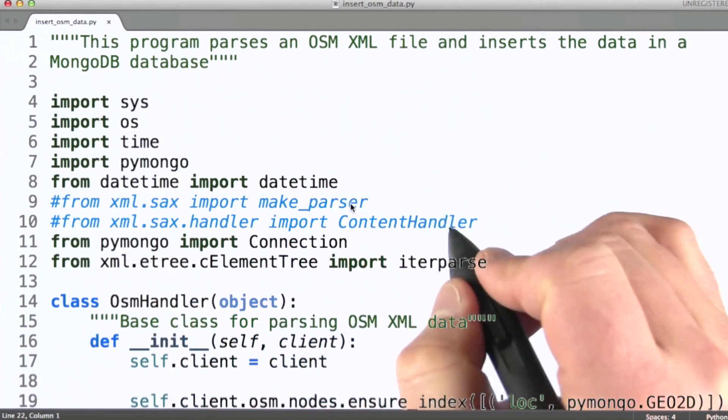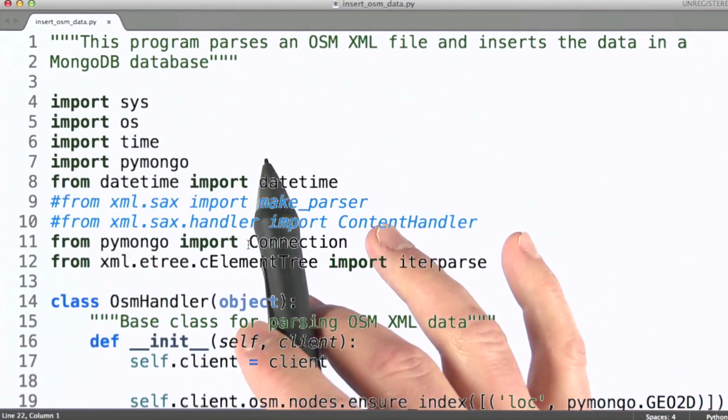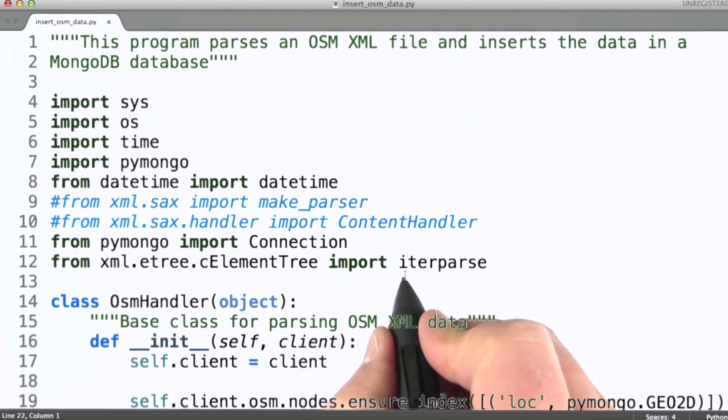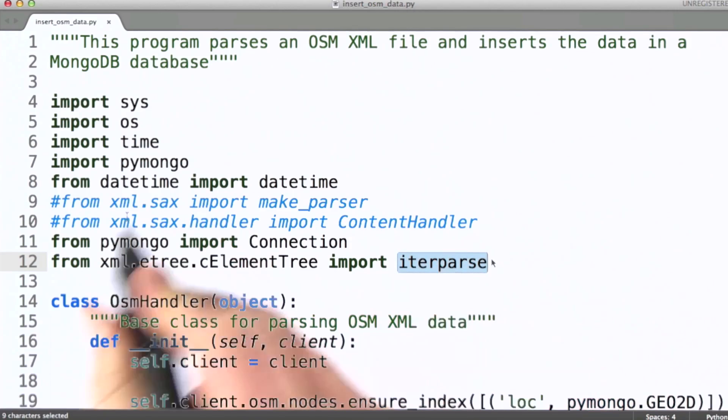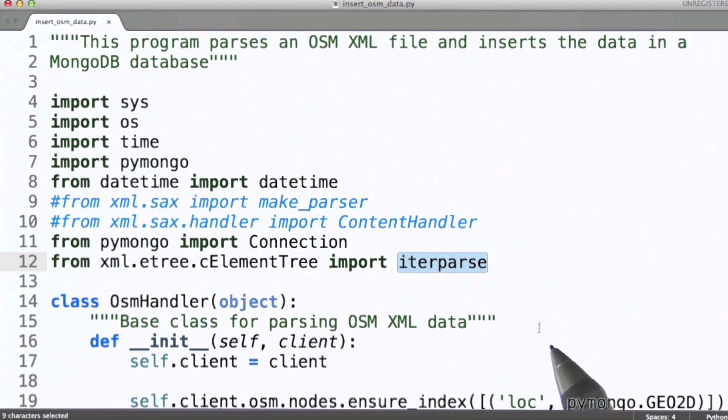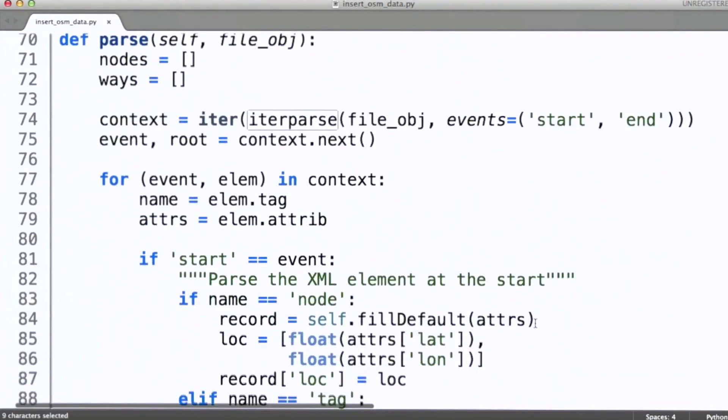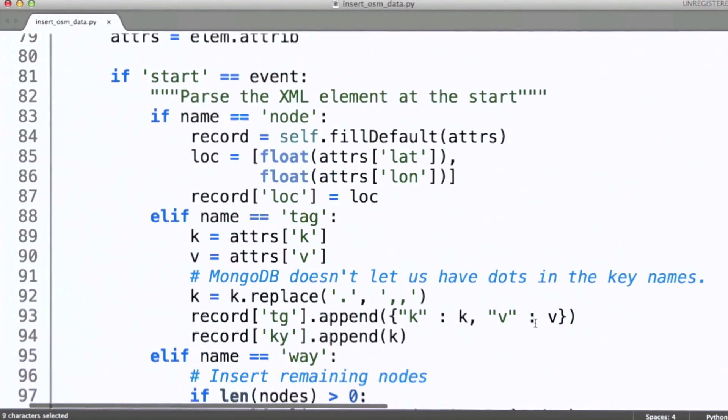This is a script that I actually retrieved from the OpenStreetMap folks. This is a script that they wrote for putting OSM data into MongoDB. You can see here that it's going to do iterative parsing of our OSM data just like we did in a previous example back in lesson three. Let's take a look a little bit further down first because I want to show you the location field here.